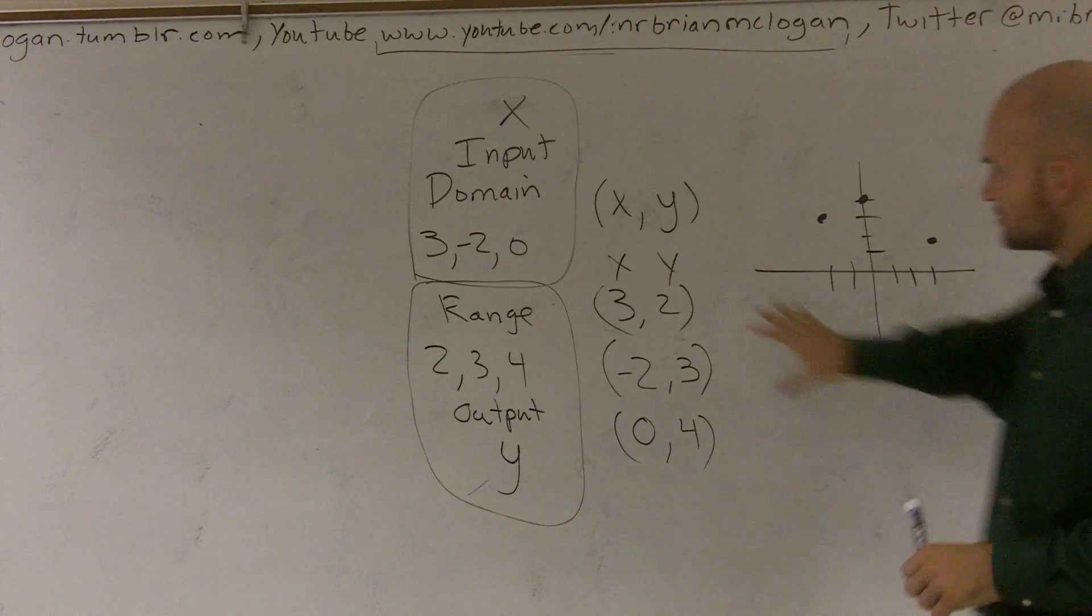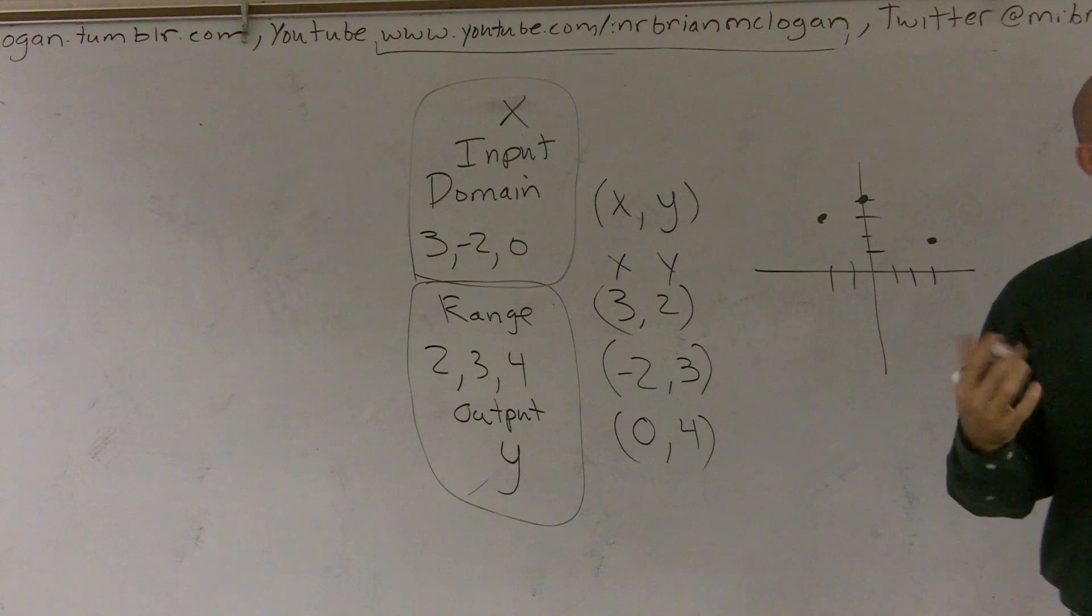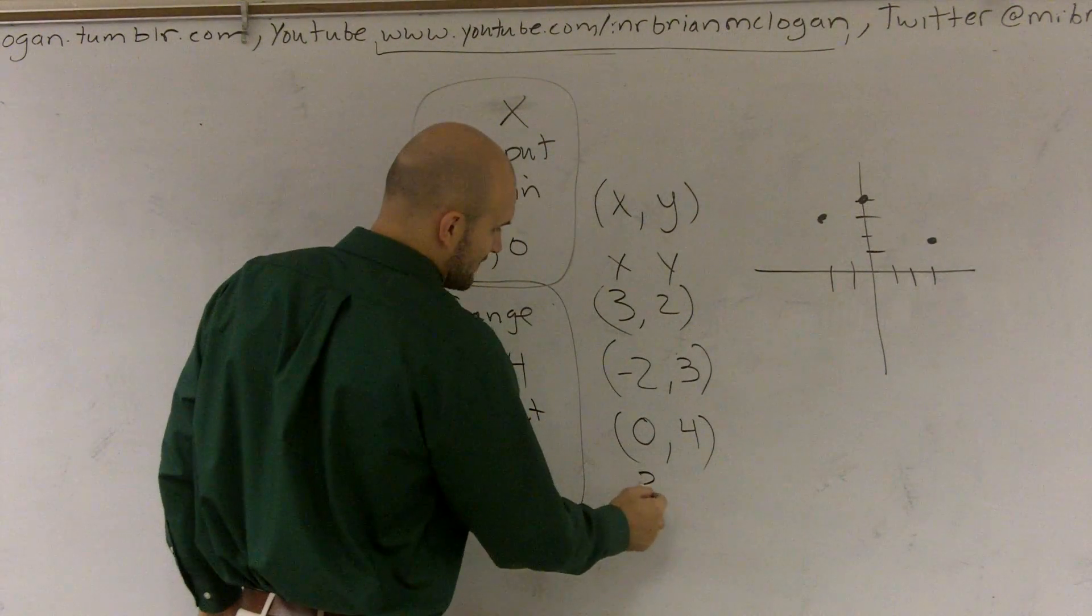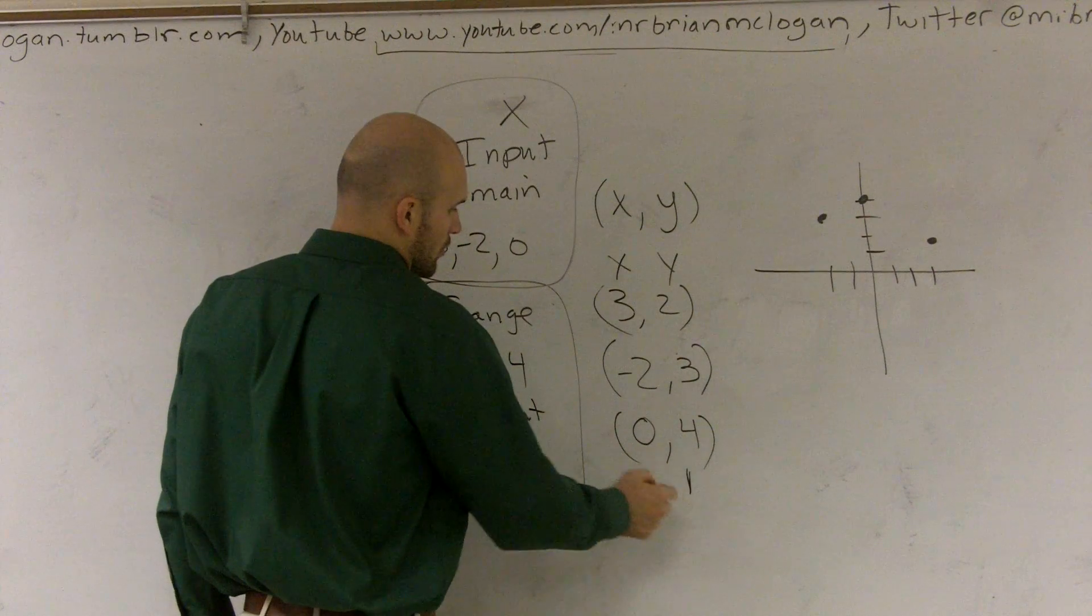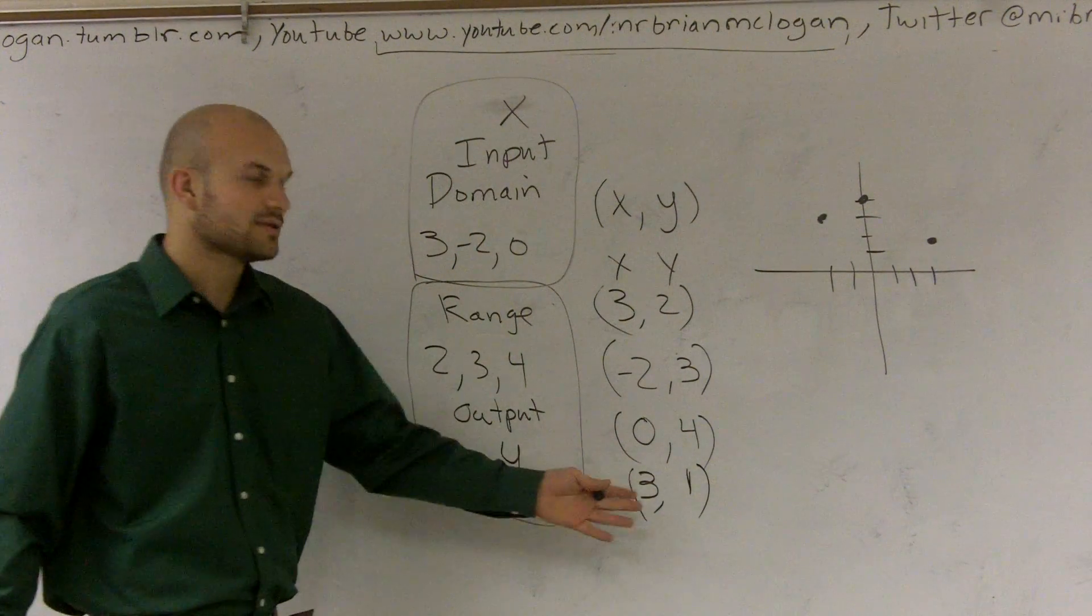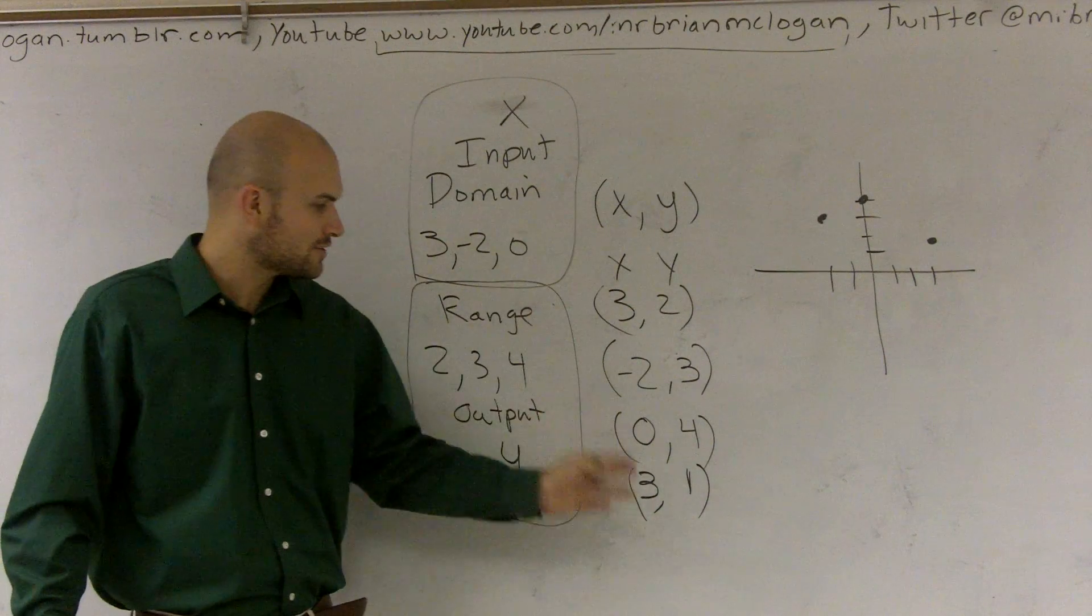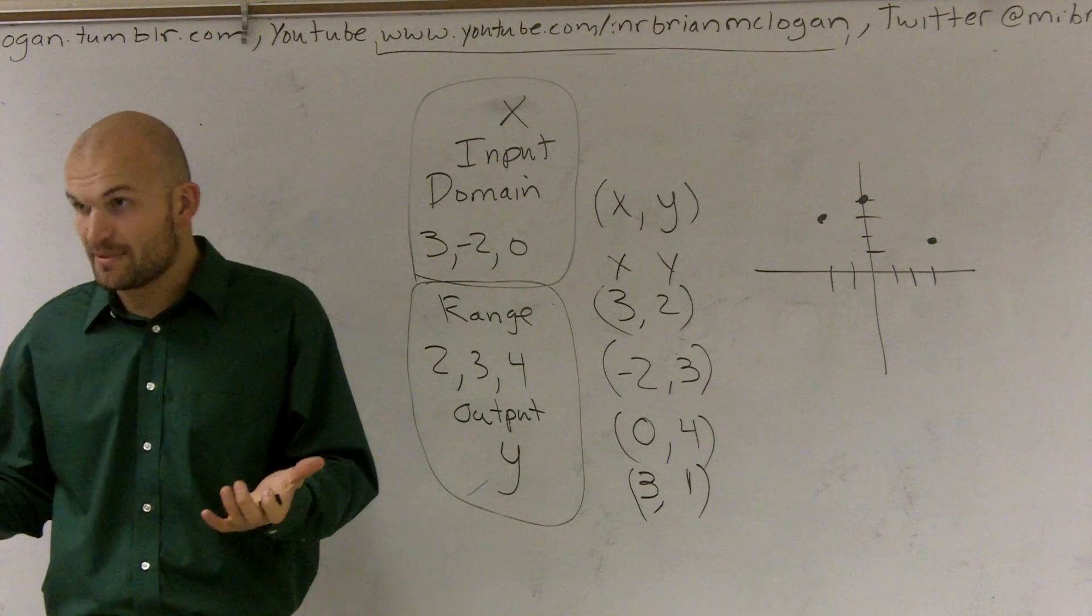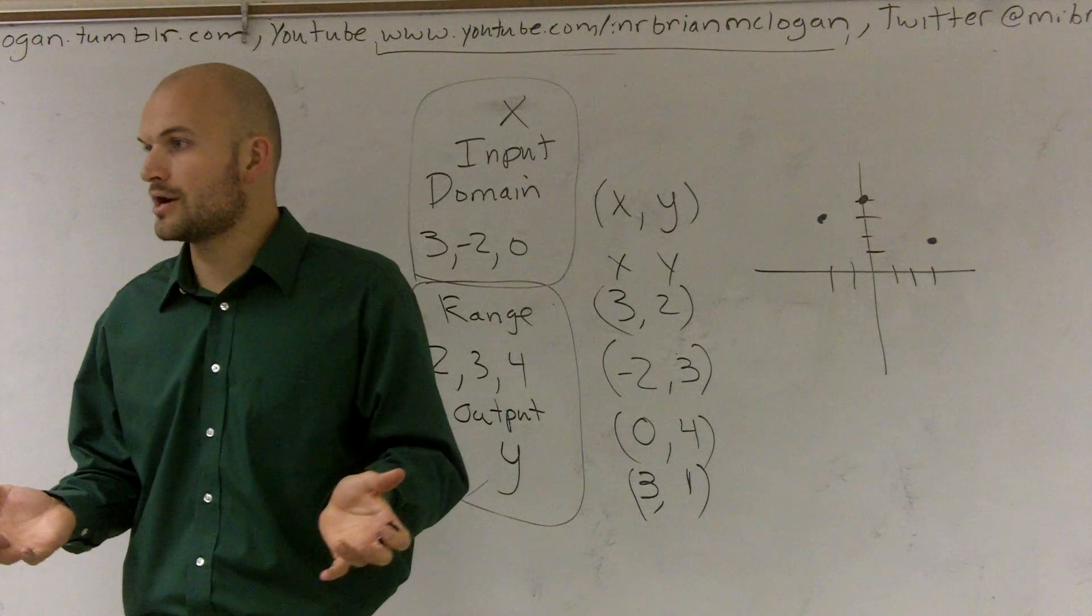Now, if I wanted to make, so right now, this is what we call a function. However, what would something not be a function is if I were to pick any one of these x values and give it a different value. Let's say 3 now would map to 1. So what we're saying is 3 is related to 2 and 3 is related to 1. Well, that's fine. They can be related, but they're not going to be a function.